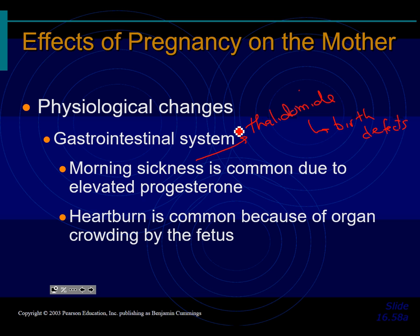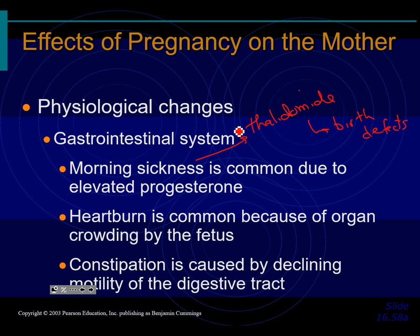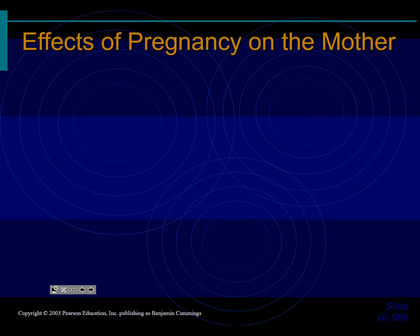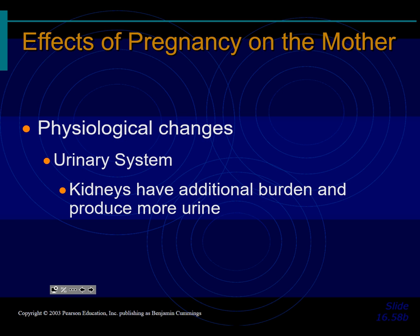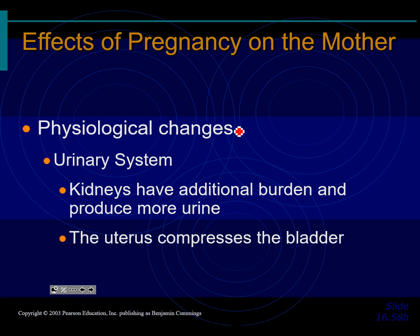Heartburn is common because of organ crowding by the fetus. Constipation occurs because your intestines can't squeeze very well since they're being squished by the baby, so things move a lot slower, which causes water to be absorbed by your large intestine, causing constipation. For the urinary system, the kidneys have an additional burden — they have to produce urine for you and the baby, taking out the baby's waste too. The other problem is the uterus is compressing the bladder.